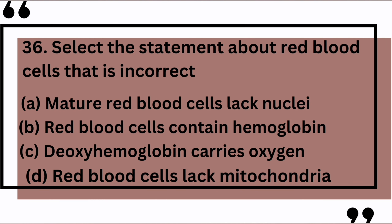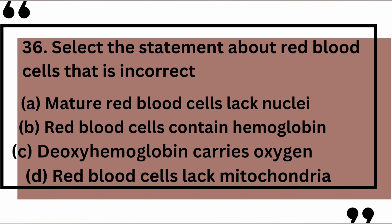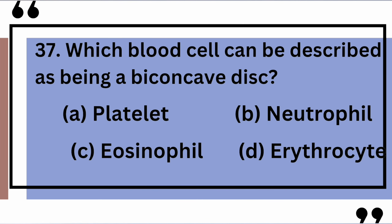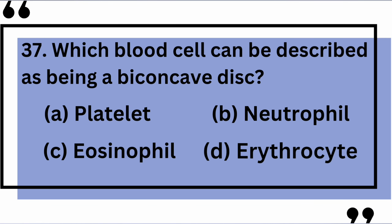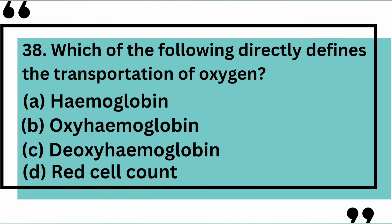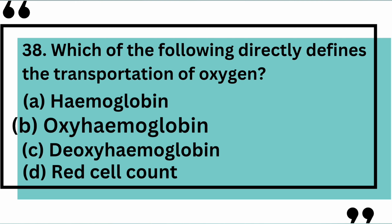Select the statement about red blood cells that is incorrect — yes, the correct answer is C: deoxyhemoglobin carries oxygen. Which blood cell can be described as being a biconcave disc? Yes, the correct answer is D: erythrocyte. Which of the following directly defines the transportation of oxygen? Yes, the correct answer is B: oxyhemoglobin.